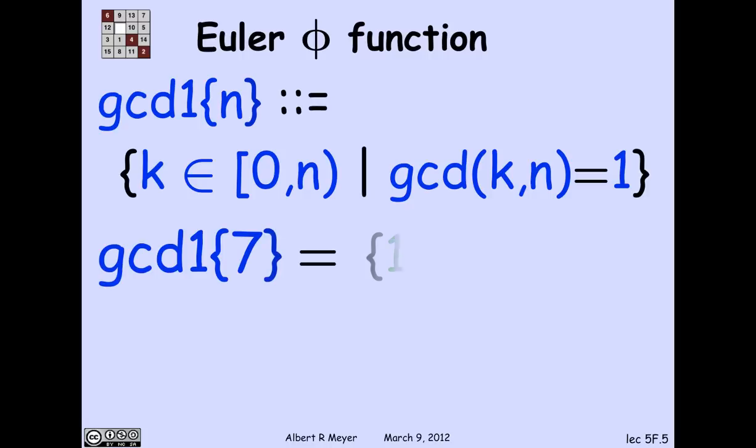So let's look at an example. GCD1 of 7, the numbers that are relatively prime to 7, are all the positive numbers less than 7 because 7 is prime. So it's the set 1, 2, 3, 4, 5, 6.